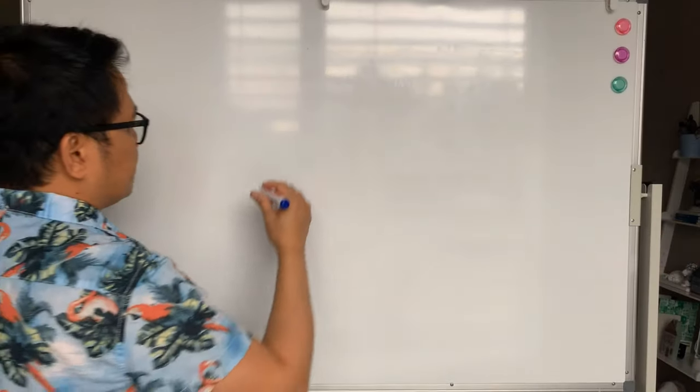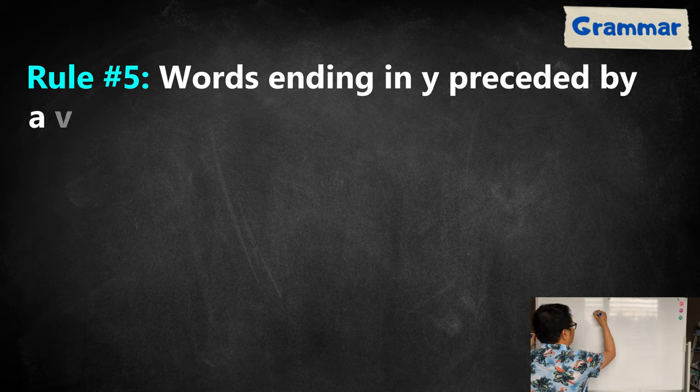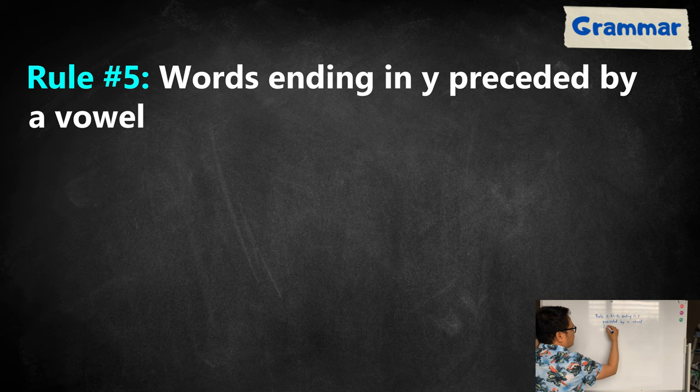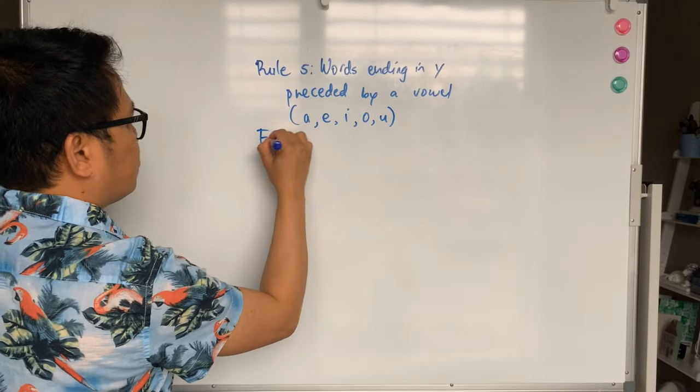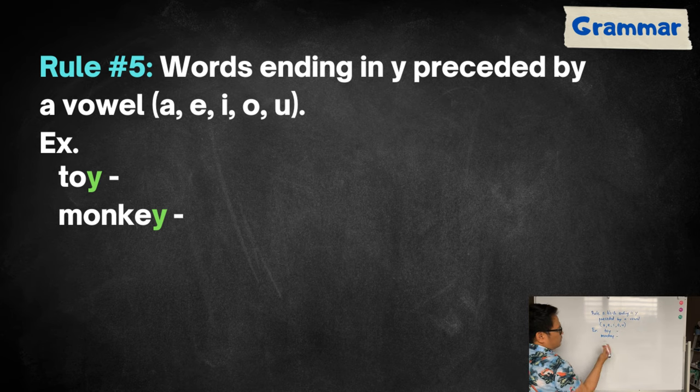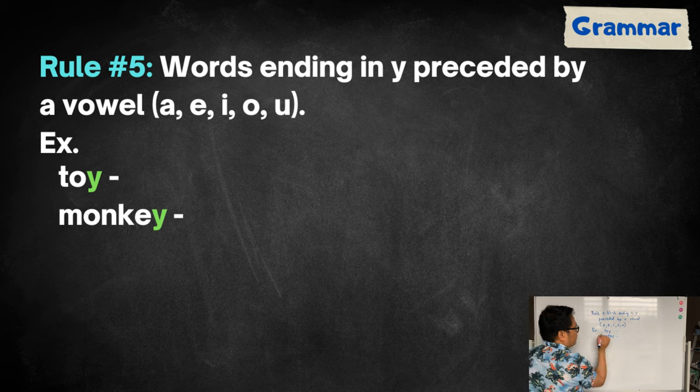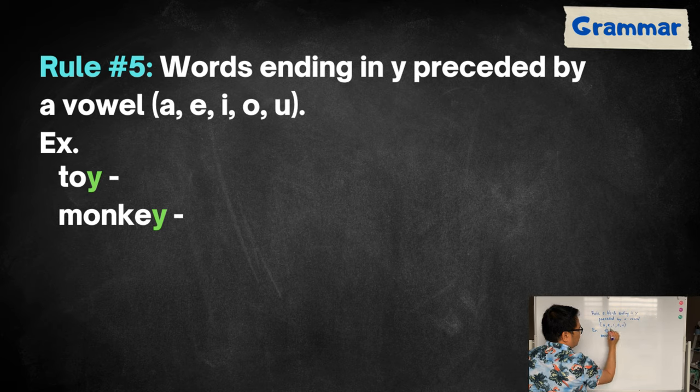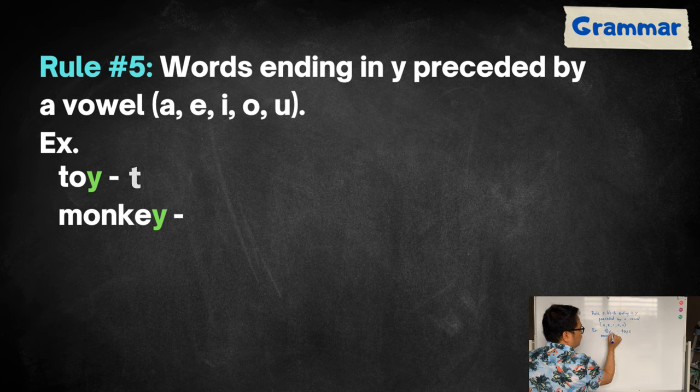The fifth rule is for words ending in Y preceded by a vowel. What is a vowel again? Those are A-E-I-O-U. For example, we have toy and monkey here. As you can see, the word ends in Y and the letter before Y there is O which is a vowel. While in monkey, the letter before Y is E which is another vowel. What you're going to do is you just need to add S at the end of the word which will become toys. Monkey will become monkeys.